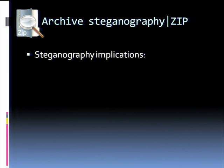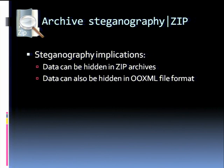What are the implications? Data can be hidden in a zip archive, but also in the OOXML file format — the OpenOffice XML format used by Microsoft Office — which is basically just a zip archive containing lots of XML files. Since these techniques apply to zip archives, they also apply to the Microsoft Office file format.